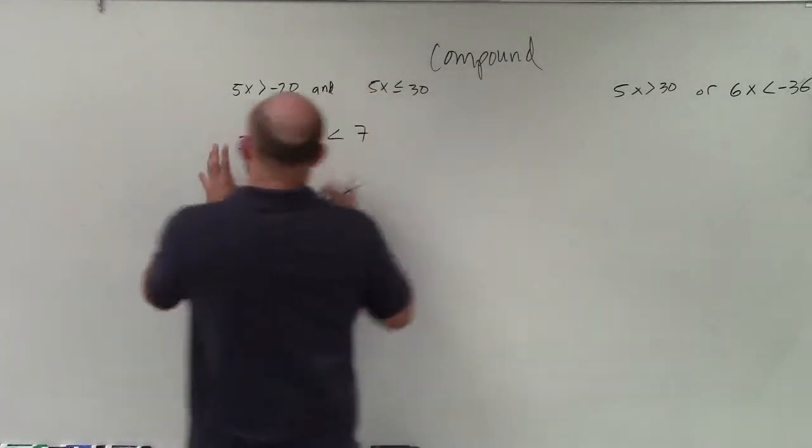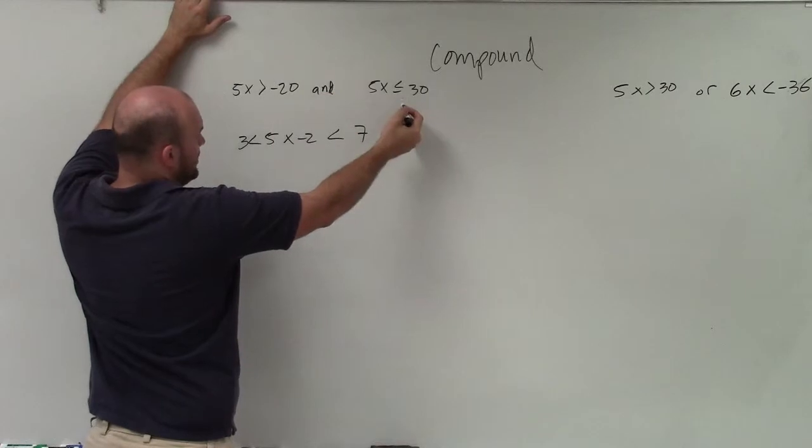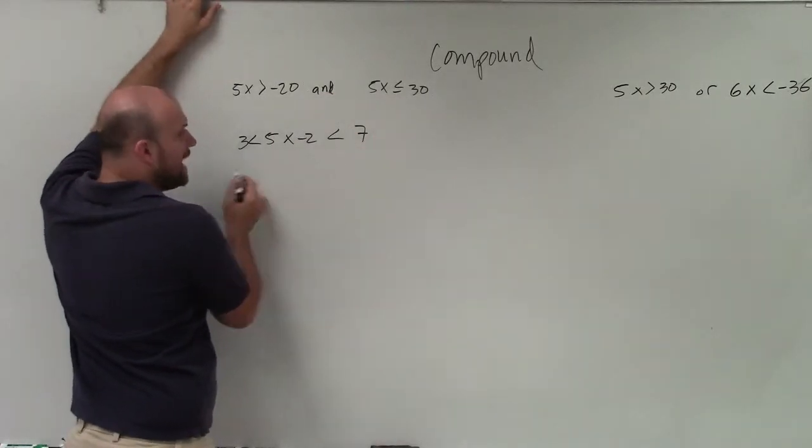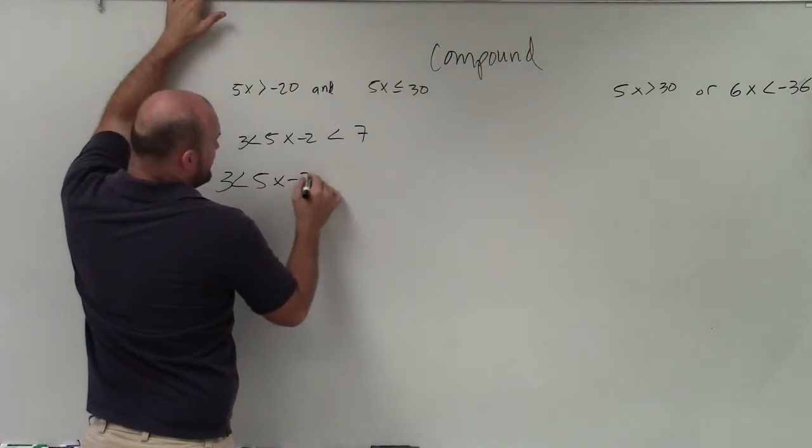There's two different ways we write ands. We can either say this inequality and that inequality, or sometimes we write it in this compound form. Now, basically, this form is just the same thing as me writing it like this.